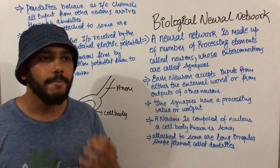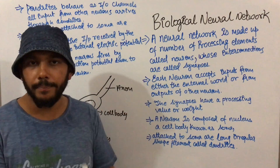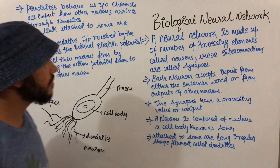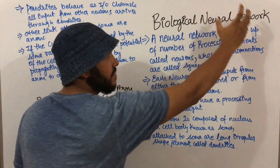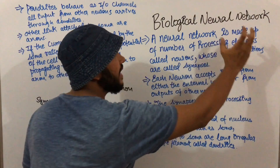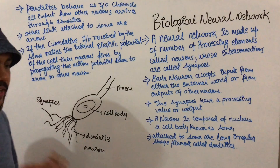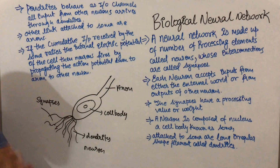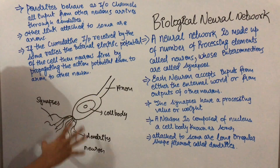We have moved towards the artificial neural network. Artificial neural network was inspired from the human brain, or from biological neural networks. A neural network is made up of a number of processing elements called neurons, whose interconnections are called synapses. In our body we have 10 to the power 10 neurons, and each neuron is connected to 10 to the power 4 other neurons.